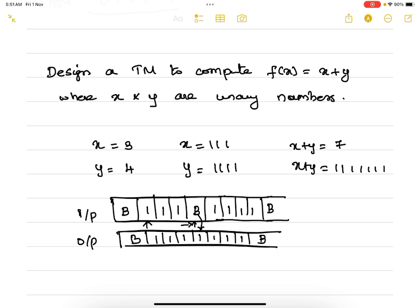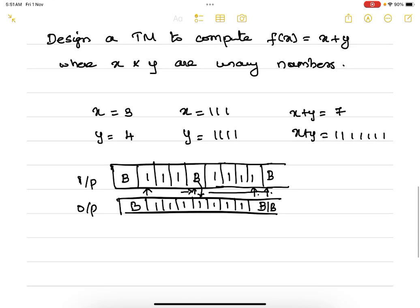And again for all other ones we can traverse till this blank, but the last one has to be replaced with blank. Only then we will have 7 consecutive ones. It is a very simple problem and this is the logic we are going to follow.